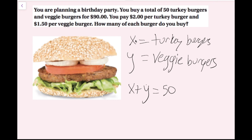To find my second equation, the total price of my order was $90, and it was $2 per turkey burger and $1.50 per veggie burger as unit costs. To figure out the total amount spent on turkey burgers, I do $2 times the number of turkey burgers, which is x — so that's 2x. Same thing for veggie burgers: $1.50 times y gives 1.5y. If I add those up, 2x plus 1.5y is the total amount I spent on burgers, and I know that equals 90. So now I have my two equations, and I just need to solve the system to find the number of each burger.